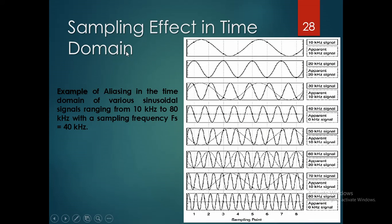Discussing the aliasing effect with one condition: aliasing in the time domain of various sine wave signals changing from 10 kHz to 80 kHz with a sampling frequency of 40 kHz. A 10 kHz signal appears as 10 kHz, a 20 kHz signal appears as 20 kHz, and a 30 kHz signal appears as 10 kHz. These are the different frequency conditions with a sampling frequency of 40 kHz.